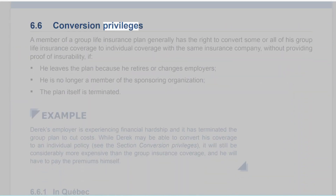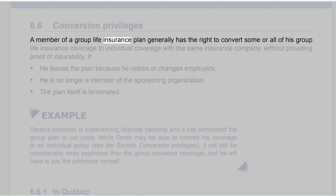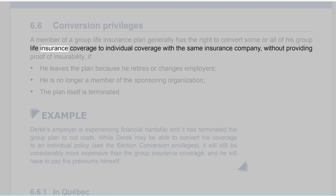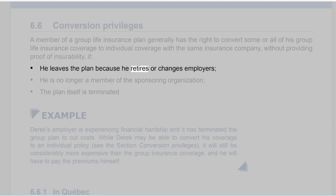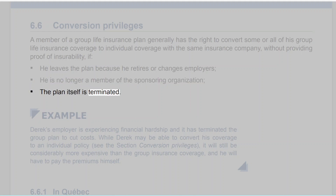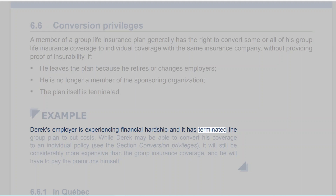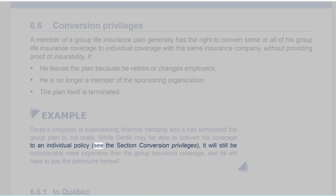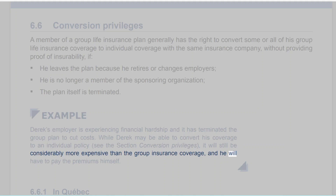6.6 Conversion Privileges. A member of a group life insurance plan generally has the right to convert some or all of his group life insurance coverage to individual coverage with the same insurance company, without providing proof of insurability, if: he leaves the plan because he retires or changes employers; he is no longer a member of the sponsoring organization; or the plan itself is terminated. Example: Derek's employer is experiencing financial hardship and has terminated the group plan to cut costs. While Derek may be able to convert his coverage to an individual policy, it will still be considerably more expensive than the group insurance coverage, and he will have to pay the premiums himself.